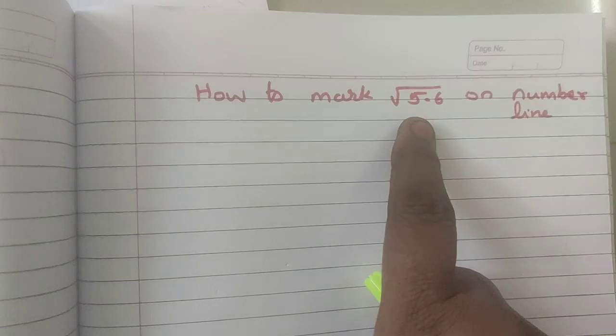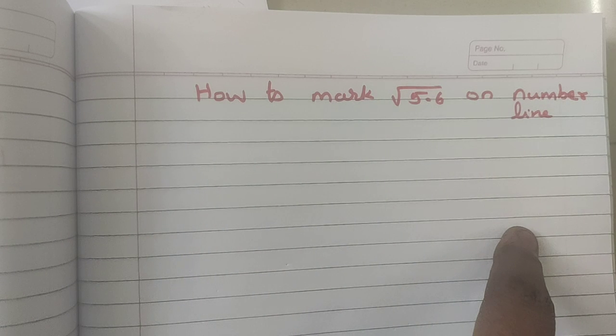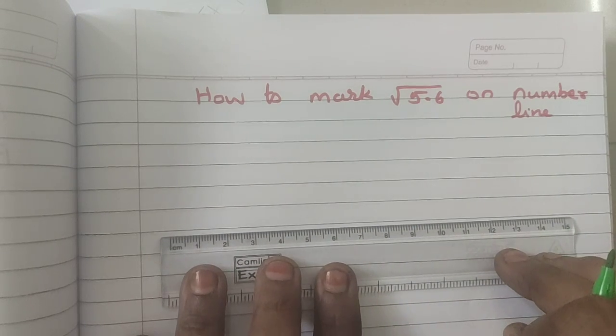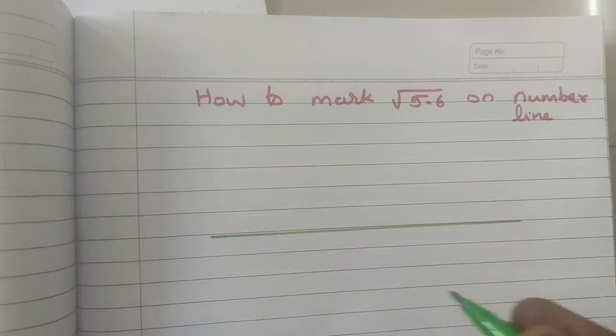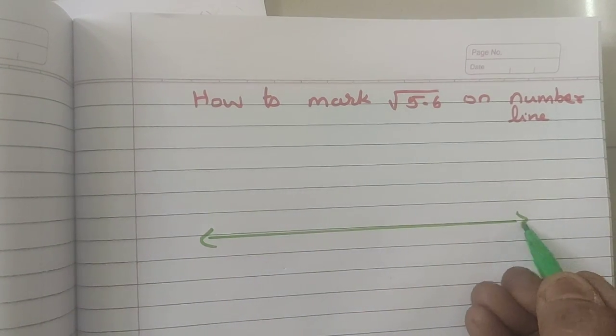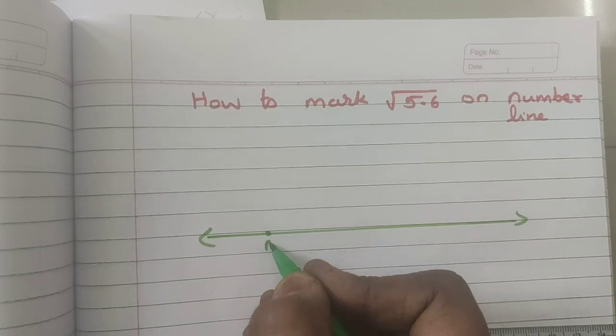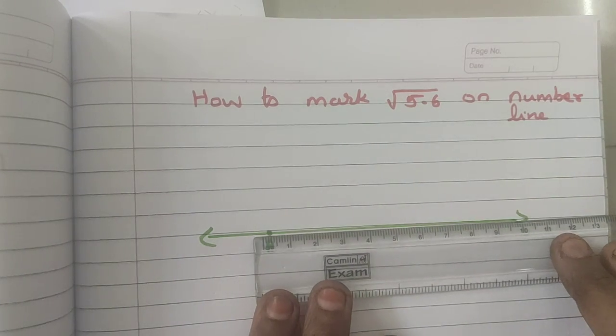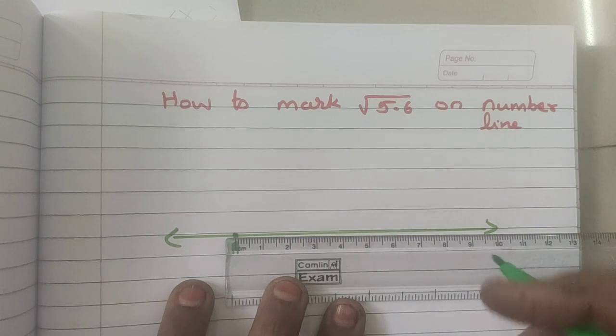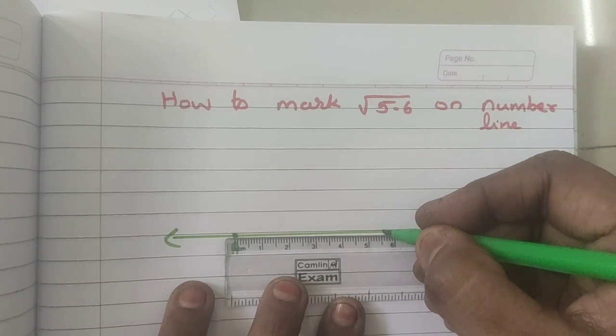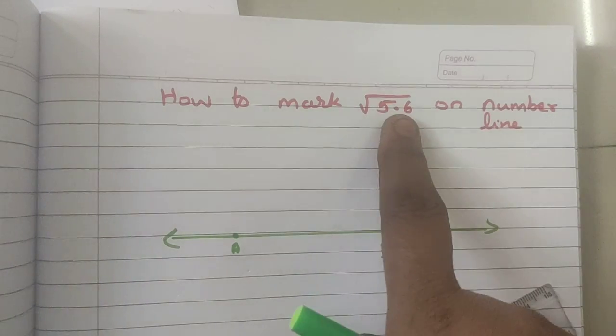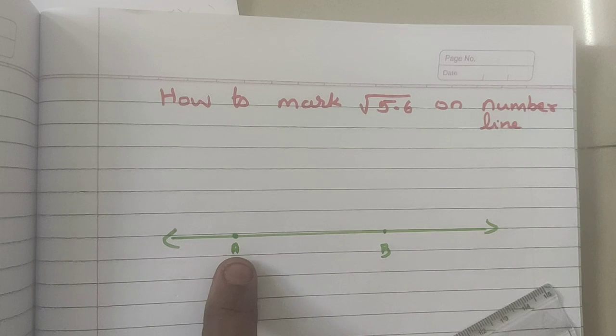So this is square root of 5.6, we should mark on the number line. For that, take some suitable measurement length, draw a straight line, mark a point A. From A, take this measurement that is 5.6 centimeter, measure 5.6 centimeter, this is point B. So what you should remember, whatever the measurement given, same measurement you should take for the points A and B.